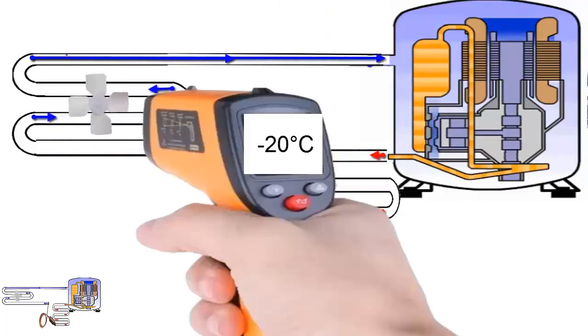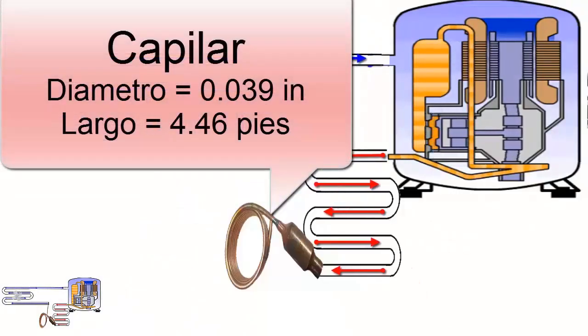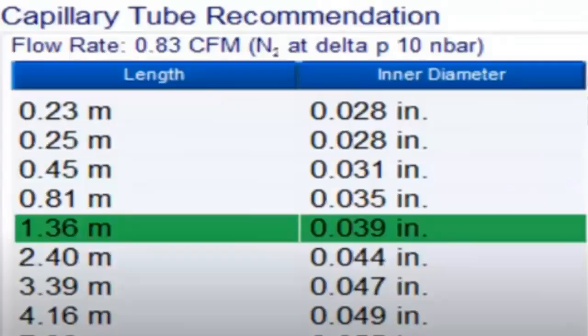For a temperature of minus 20 degrees Celsius, a capillary tube with a diameter of 0.039 inches and a length of 4.46 feet, equivalent to 1.36 meters, is recommended. On the screen, we are showing other alternative measures for the capillary tube.